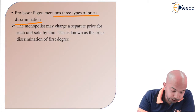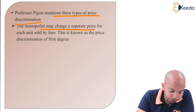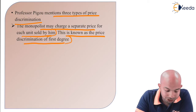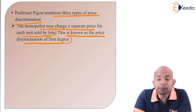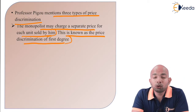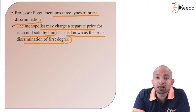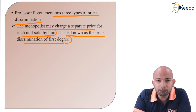The first one is where the monopolist may charge a separate price for each unit sold by him. This is known as price discrimination of the first degree. He may sell any of these specific products at different prices per unit.